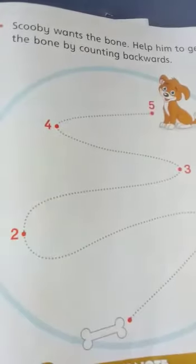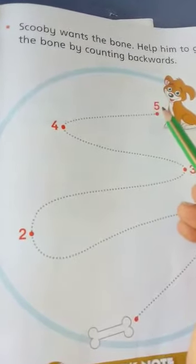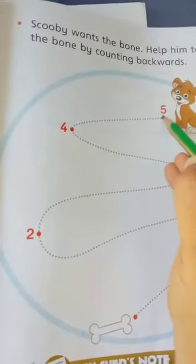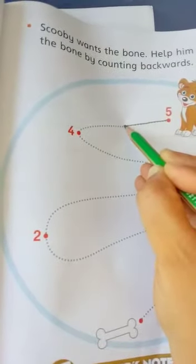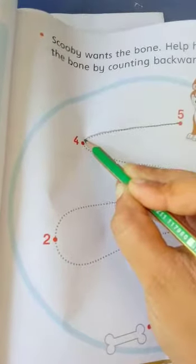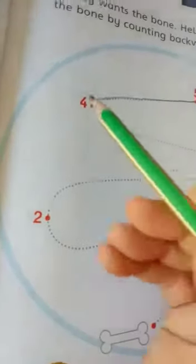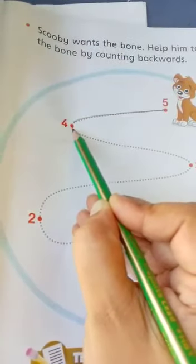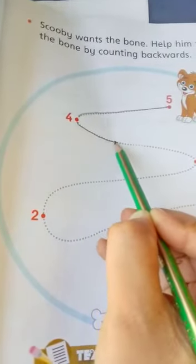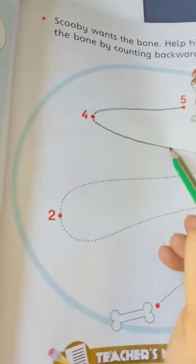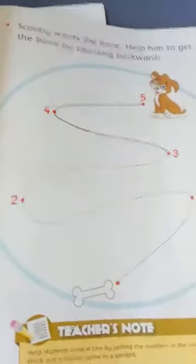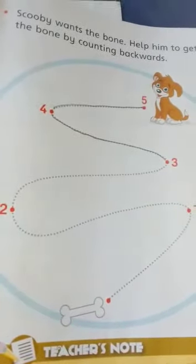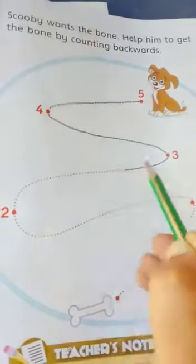Now we will start backward counting. We will start from number five. Now make a line — yes, very good! We will help Scooby get the bone by counting backward. Five, four, and three — this is backward counting. Now make this line, very good.